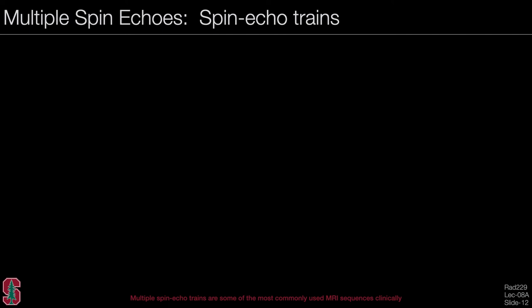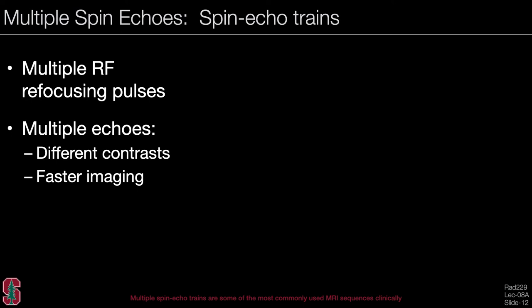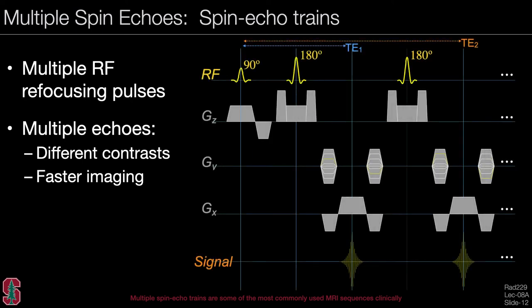We can also use multiple spin echoes in what are called spin echo chains, using multiple RF refocusing pulses to produce multiple spin echoes. We can use these to obtain images with different contrasts based on different echo times, or combine all the echoes into a single image and acquire the image much faster. A spin echo train sequence has an excitation, a refocusing pulse, and echo time TE1, with additional refocusing pulses producing additional spin echoes at TE2 and beyond.